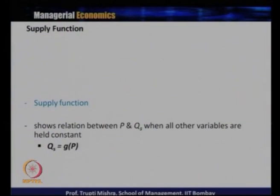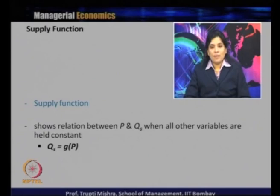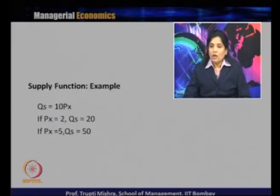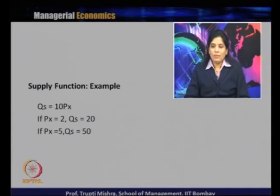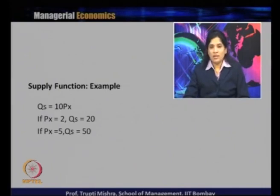Now we look at the supply function. Keeping all other variables fixed, the relationship between price and quantity supplied comes directly from the law of supply — a positive relationship. If we formulate a supply function: Qs = 10Px. If Px equals 2, Qs is 20; if Px equals 5, Qs is 50. Quantity supplied is dependent on price positively, as there is no negative sign — they are positively related.